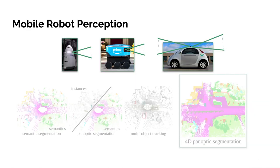Mobile robots such as delivery vehicles and autonomous cars need to be able to interpret raw sensory data to navigate in busy situated scenes. Nowadays such robots are often equipped with RGB sensors, or in the case of outdoor environments, with LiDAR sensors.